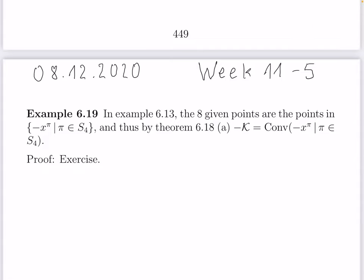Welcome to the course on Game Theory in the Autumn Term 2020 at the University of Mannheim. This is the fifth video of week 11. In the last video we saw Theorem 6.18, which gave important results for convex cooperative games. We saw the definition of the permutation vectors, and in a convex game they are the corners of the core, with the core being their convex hull. In this video I want to go back to two examples from section 6.2: first Example 6.13 with the new water supply system for four communities, and later the general example of three-person games in 0-1 reduced form.